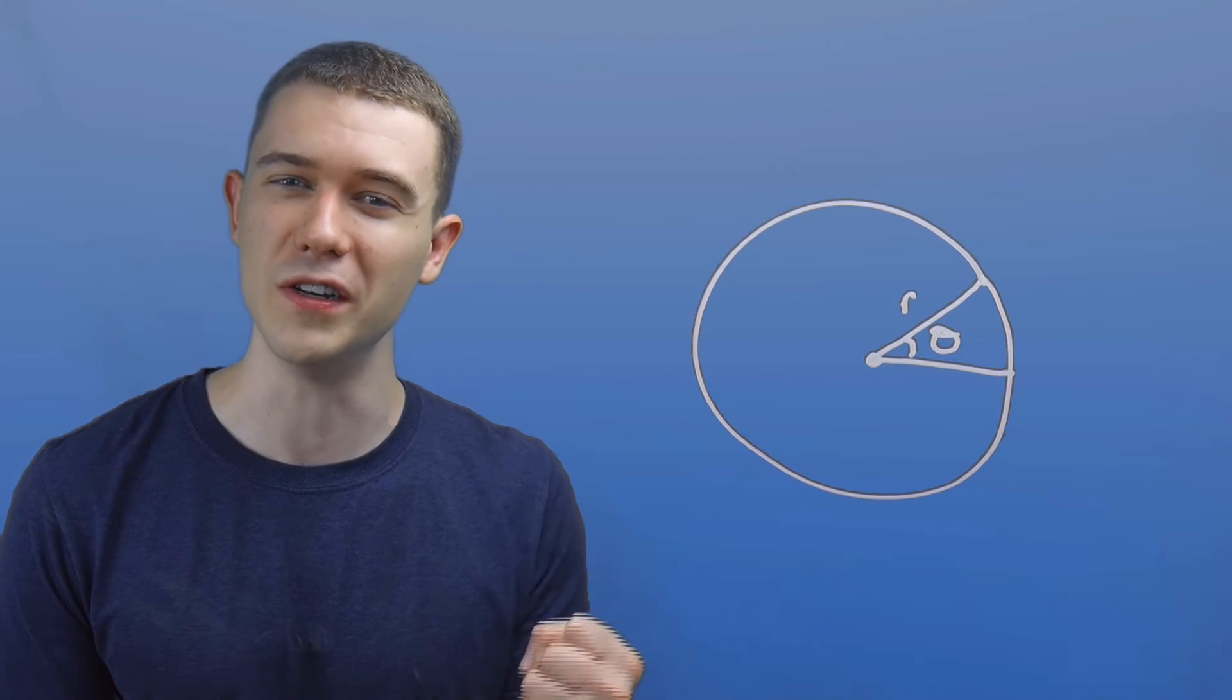Because when you're talking about the unit circle, of course, going around the unit circle once should be one pi, right? But it's not. It's two pi. Going around the unit circle once is one tau. And that feels so good.